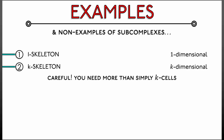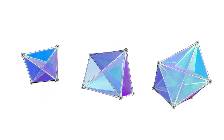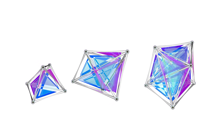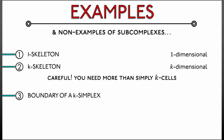In order to satisfy the subcomplex condition, you need all of the faces. For a final example, consider a k-simplex as your simplicial complex and look at its boundary. This consists of all the faces of that one open k-simplex. That boundary has all the (k−1)-dimensional simplices, the (k−2)-dimensional simplices, and so on — all the edges, all the vertices — everything of dimension less than k. This is a subcomplex of dimension k−1 because of those k−1 simplices.